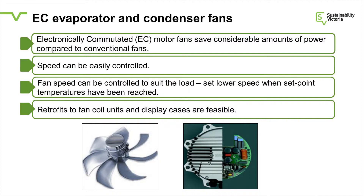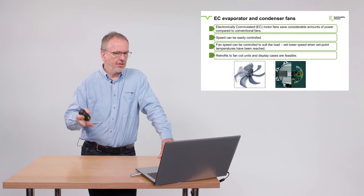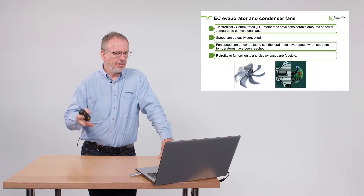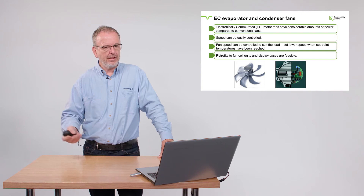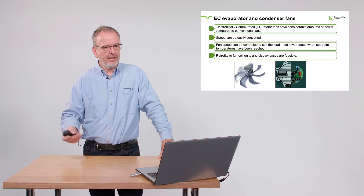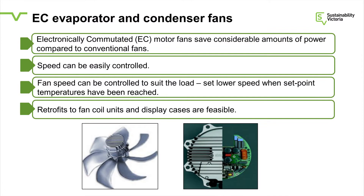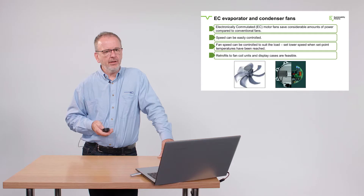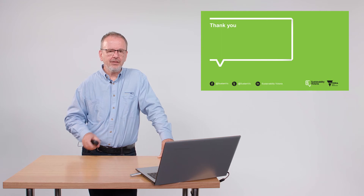EC fans are a really useful piece of kit. They have internally built-in speed control, allowing you to control the fan speed to suit the load, whether it's on a condenser or on an evaporator. My recommendation generally is: whenever you buy an evaporator or a condenser today, it's almost a no-brainer — buy it with EC fans on both the evaporator and the condenser. Assuming you have the controller to drive it, that additional capital cost will certainly pay for itself. This also applies to supermarket display cases, which also have fans and are now available as EC fans.